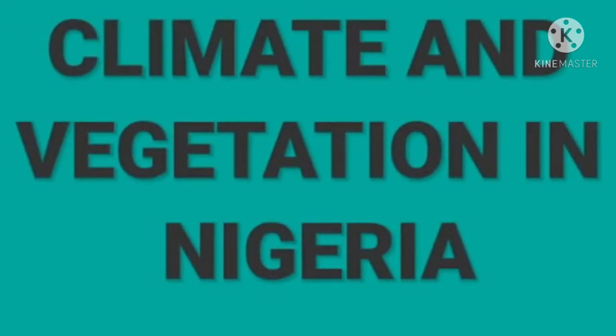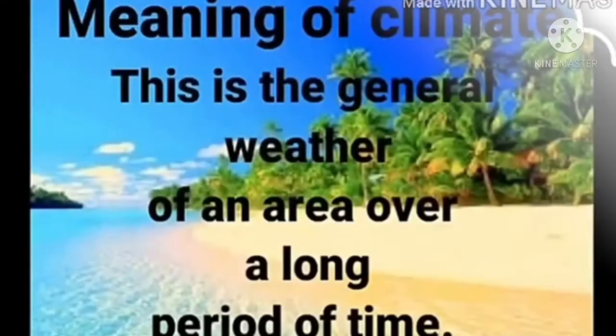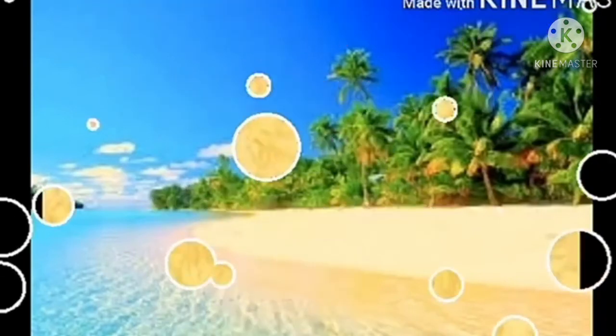Another topic we want to look into is climate and vegetation in Nigeria. When we talk about climate and vegetation in Nigeria, we are trying to look at the seasons, the weather, and the environmental condition of the country. The pink region on the map shows the hottest areas, the blue region is moderately hot, while the green regions are the cool places. A climate is the general weather of an area over a long period of time. In Nigeria, we have two seasons: dry season and the rainy season.